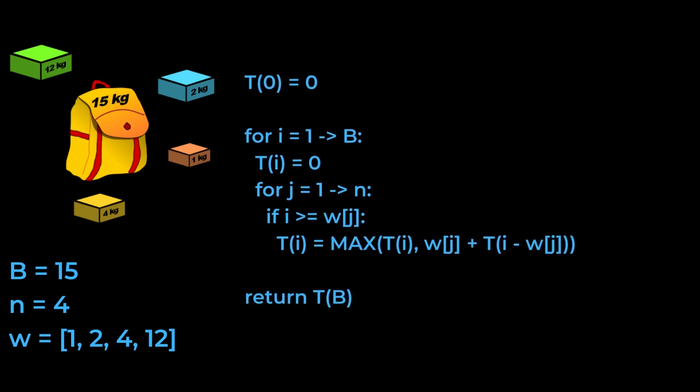The pseudocode can be trivially derived from this recurrence relation. It involves a loop up to B, and inside of this, a nested loop over all of the items, where we're going to take the maximum value over the possible choices, including the previous table entries.